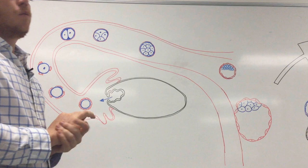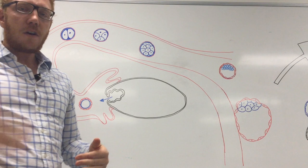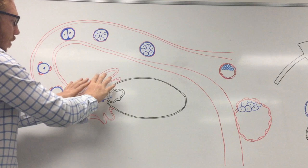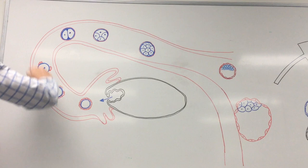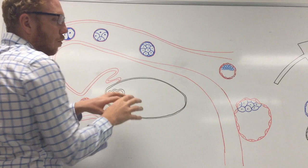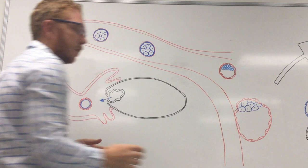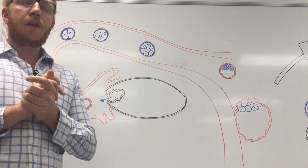We're going to work on two parts of the whiteboard. This first section shows a frontal section of the female reproductive anatomy. We've got the fallopian tube leading into the uterus. The anatomy itself includes the ovaries and the fallopian tubes moving into the uterus. Let's start with week one.